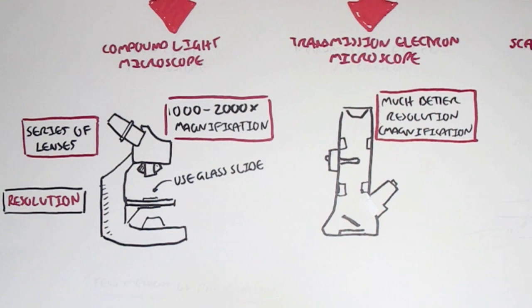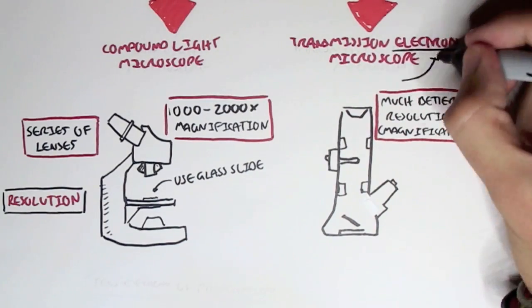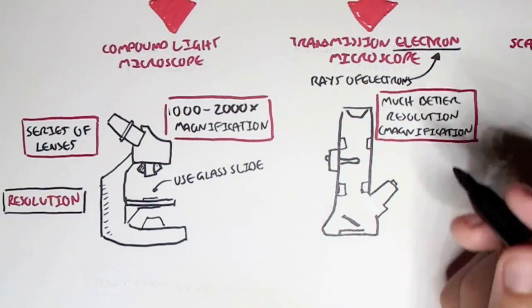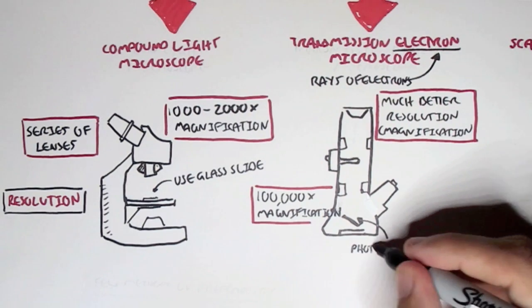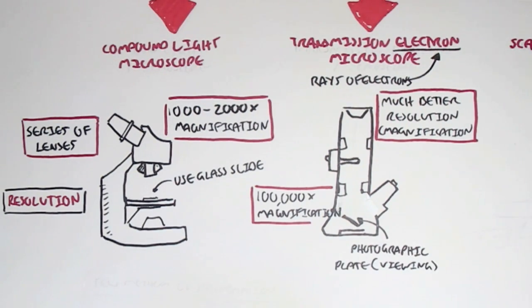So why can we see these microorganisms in better detail? Because the Transmission Electron Microscope uses electrons, not light waves. And electron waves are much smaller, and so we can see better detail. And typically, a Transmission Electron Microscope can magnify up to 100,000 times magnification. And we usually view the image on a photographic plate.